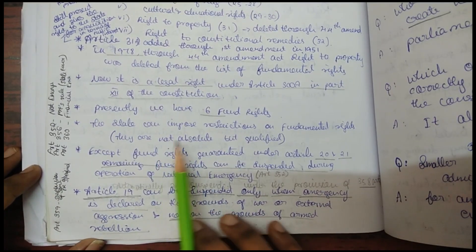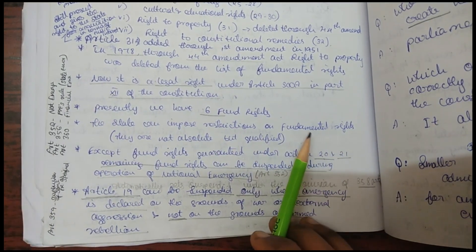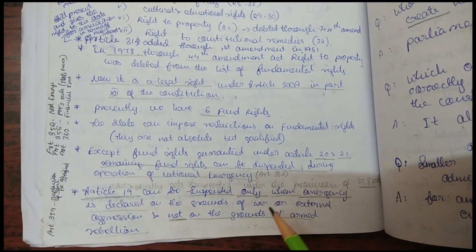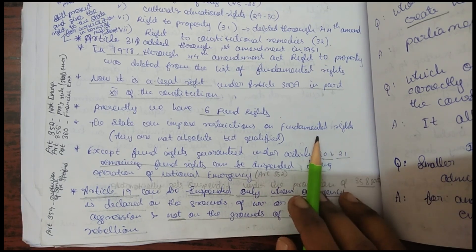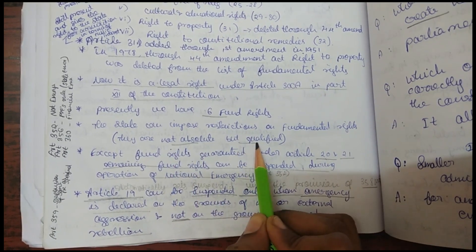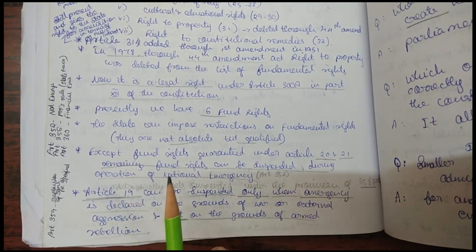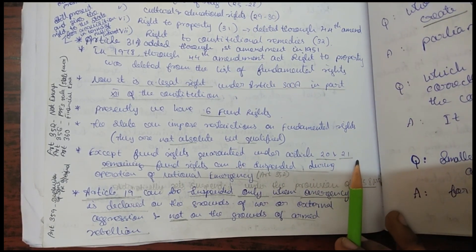The state can impose restrictions on fundamental rights, so fundamental rights are not absolute — they are qualified. Some reasonable restrictions can be imposed on them. However, fundamental rights guaranteed under Articles 20 and 21 are exceptions and cannot be suspended even during a national emergency.